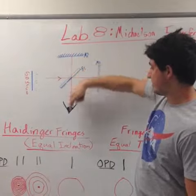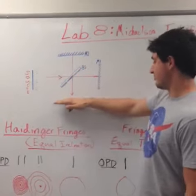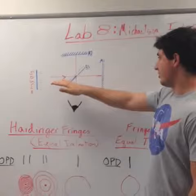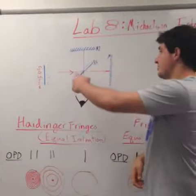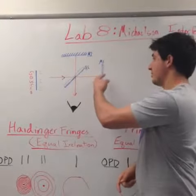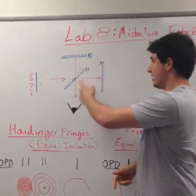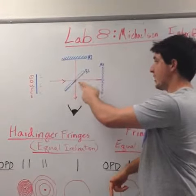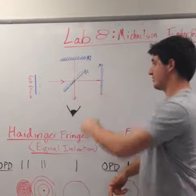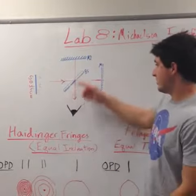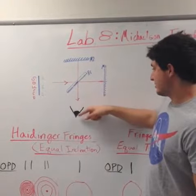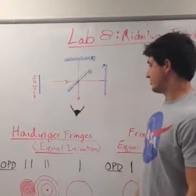That beam went back once more through the beam splitter to where it was observed. The other beam just passed through the beam splitter once, off of mirror one, and reflected back off the reflecting surface of the beam splitter, and went back to where it was observed.